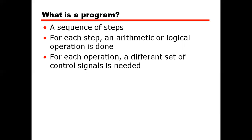There are multiple instructions and commands written in a program — those steps are actually a sequence of steps. For each step, an arithmetic or logical operation is done, and for each operation, a different set of control signals is needed. In this chapter and the overall course, we have all the control signals, strategies, frameworks, and functionalities to discuss, and we may be able to increase the efficiency of our system.